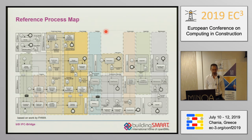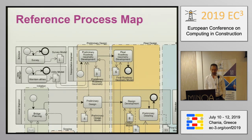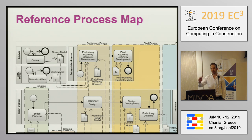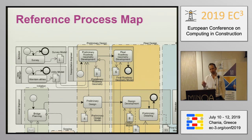Next step was to define a process map. The reference process map was important because we wanted to define the different stakeholders in bridge design and management projects. These different stakeholders appear in swim lanes. We identified the typical activities they perform and where they hand over models to other partners — every number you see represents a model handover. This is a reference process map, not a standardized one, because every country does things a little differently. However, every country can find itself here and refer to this process map.